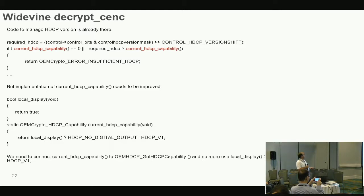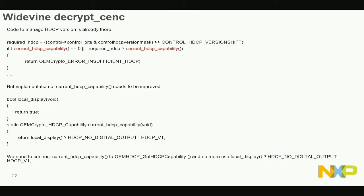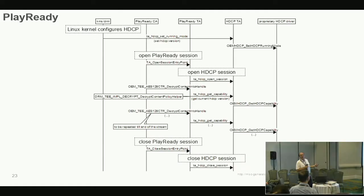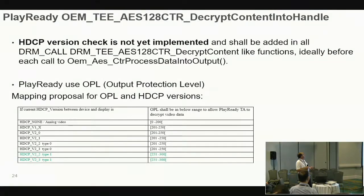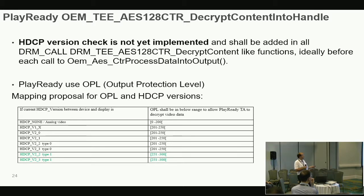What is not good today is that values are hardcoded — the code returns true for local display so we don't care about the HDCP version. We just need to replace that hardcoded return with a call to get_HDCP_capabilities. The same mechanism applies to PlayReady, except PlayReady has no HDCP version management yet, so more code needs to be added. We will map the PlayReady output protection level — which ranges from 0 to 300 — to HDCP versions, and we are in contact with Microsoft to confirm they are okay with that.